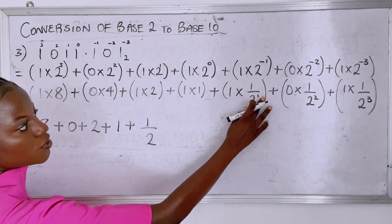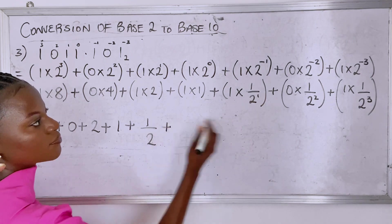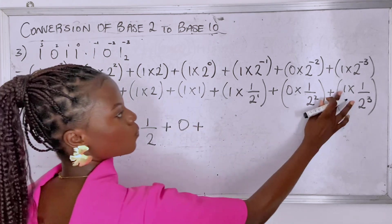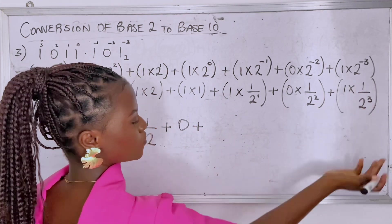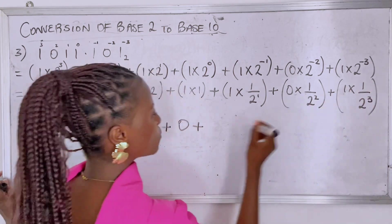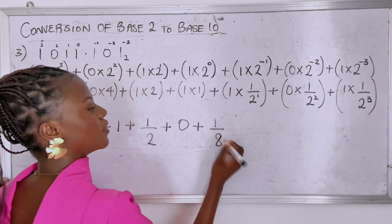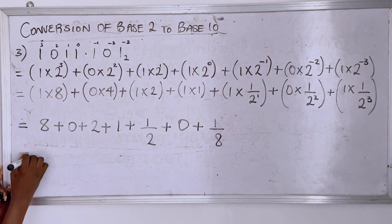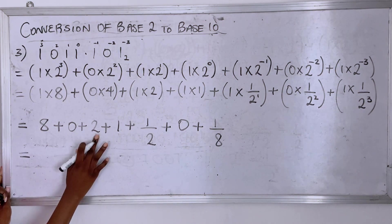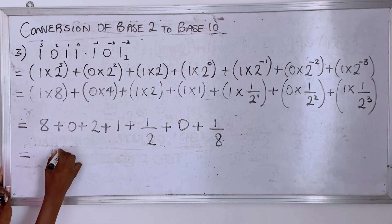Because two raised to the power one is two, zero times the whole of this thing here is zero, one times one over two raised to the power three is one over eight times one which is one over eight.